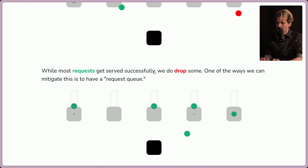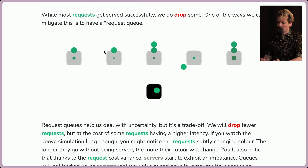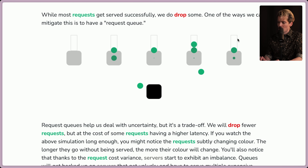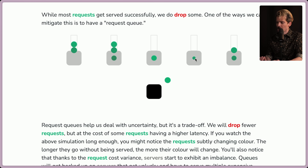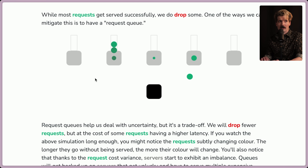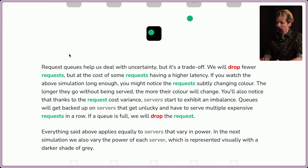While most requests in this example are getting served successfully, we are dropping some. One way to mitigate this is to have a request queue, where each server now has a queue — the work gets queued up and way fewer things get dropped. When you hit the max queue on one of these servers, you will still drop things sometimes. Also, if a request hits a server with a full queue, there were other open servers it could have hit and that request could have been resolved faster — but round robin hit a box that was backed up. Request queues help us deal with uncertainty, but it's a trade-off: we'll drop fewer requests at the cost of higher latency for some.